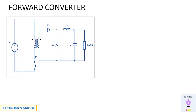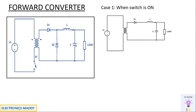The flyback converter is generally used for low-power applications, and the forward converter is essentially an extension of it for higher power. Now let's look into the circuit operation. Case 1: let us assume the switch is on. When the switch is on, it is shorted at this point, and current starts flowing in this particular direction through this path and returns over here.